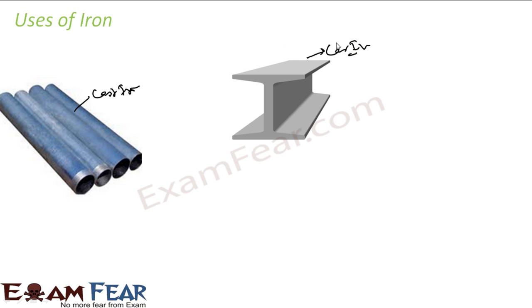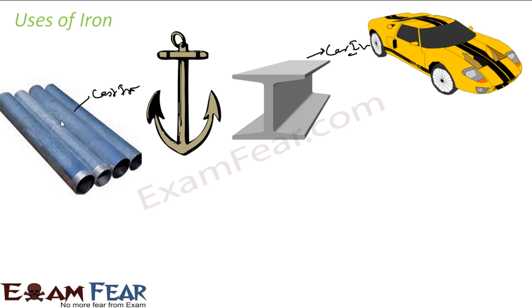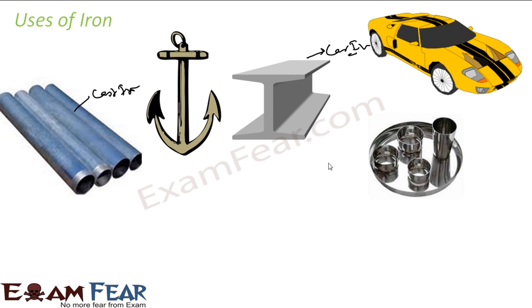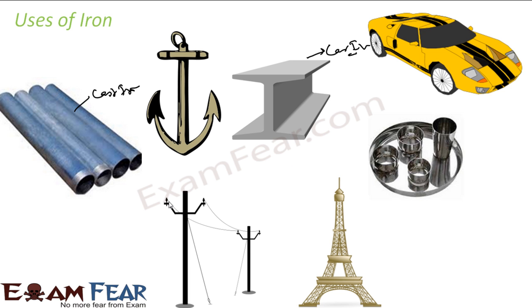Talk about wrought iron which is very good - they are used to make anchors for ships. They're also used to make boarding of the car, also used to make utensils. Utensils - stainless steel uses iron actually. It is used to make big buildings, right? Used to make wires, so a lot of applications of iron.